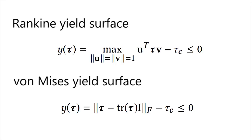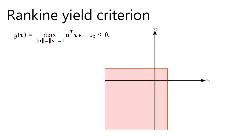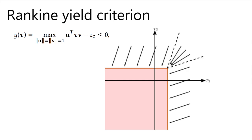We use two different plasticity models to capture different fracture modes. The Rankine yielding condition constrains the maximal principal stress and is good for modeling mode 1 fracture. Its yield surface forms a quadrant or octant in the stress space. We obey the associative law when projecting the stresses.